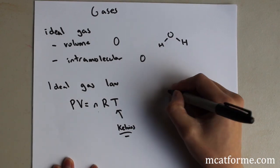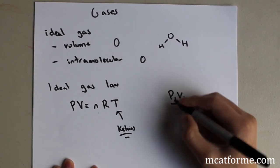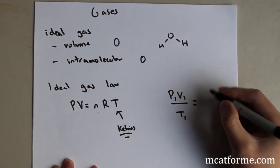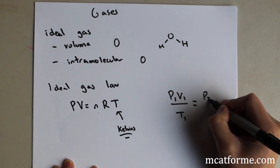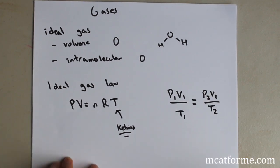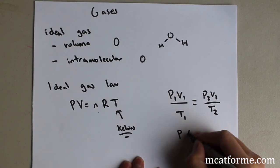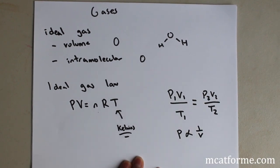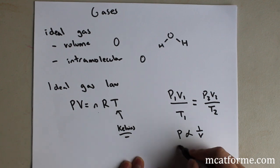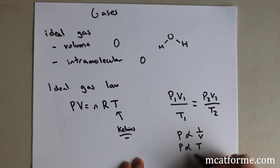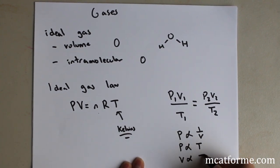But another one we're going to be working with is P1V1 over T1 equals P2V2 over T2. So what this is saying is that pressure is inversely proportional to volume. And likewise, volume is inversely proportional to pressure. But pressure is proportional to temperature, and volume is proportional to temperature.